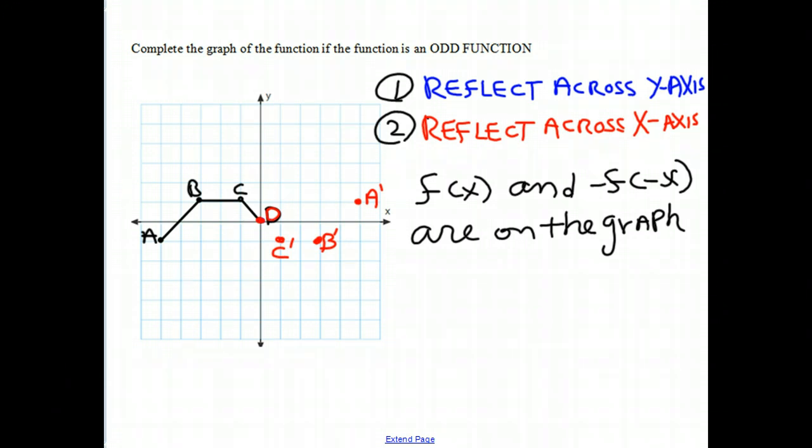And now all we need to do is connect the dots. So if we just connect from A prime to B prime, from B prime to C prime, from C prime to D prime, this entire graph that you see on these axes is an odd function. It's an odd function because for every point on the graph, there's a corresponding point that's been reflected across the y-axis and the x-axis.